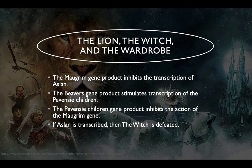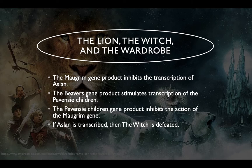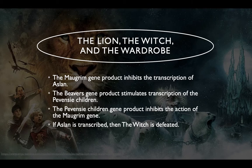The mogrim gene product inhibits the transcription of Aslan. Mogrim is the wolf that works for the white witch. The beaver's gene product stimulates transcription of the Pevensey children, and the Pevensey children gene product inhibits the action of the mogrim gene. If Aslan is transcribed, then the witch is defeated. Basically, in the movie, Mogrim — the witch's wolf — tries to prevent Aslan from coming to fight the witch. The beavers guide the Pevensey children, and the Pevensey children kill Mogrim. And in the end, if all this goes as planned, Aslan will be able to come and defeat the evil witch.